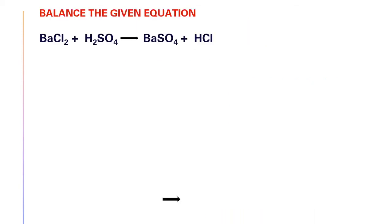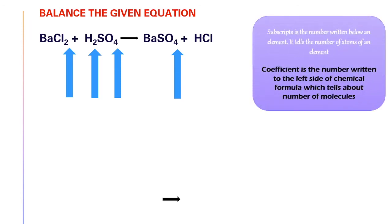Let us take one equation and try to solve it: BaCl2 plus H2SO4 gives BaSO4 barium sulfate plus HCl. First, before balancing the equation, let us clear the doubts about the numbers written below atoms of elements. You can see in the equation Cl subscript 2, hydrogen also 2, then O4. What actually do these state? They are called subscripts. Subscripts is the number written below an element. It tells the number of atoms of an element.